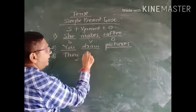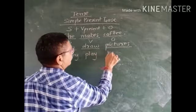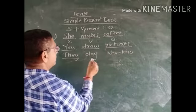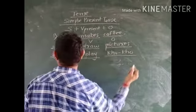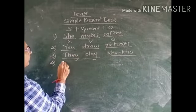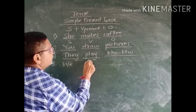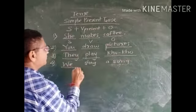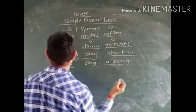They play kho kho. Here they is subject, play is verb, and kho kho is object. We sing a song. Here we is subject, sing is verb, and song is object.